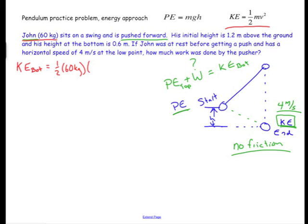And then we're told this velocity is 4 meters per second. And then that quantity gets squared. So the kinetic energy at the bottom here is equal to 480 joules.